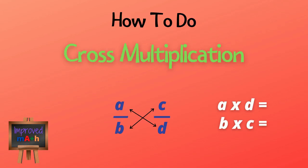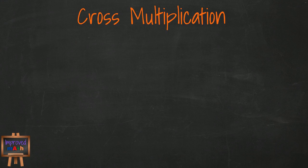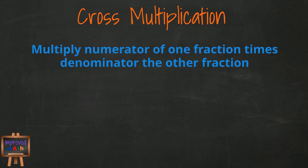Today we are going to look at cross multiplication. Cross multiplication is my favorite way to quickly compare fractions. The steps to performing cross multiplication are very straightforward. You simply multiply the numerator of one fraction times the denominator of the other.